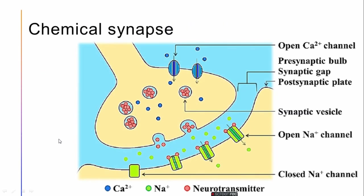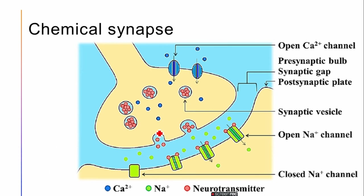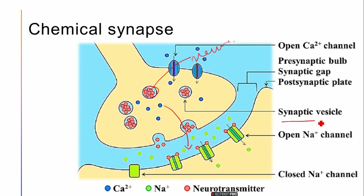Moving forward to the functional classification, we have the chemical synapse. In a chemical synapse, the axon terminals bear vesicles, inside which there are neurotransmitters. The neurotransmitters are released into the synaptic cleft. There is a space between one neuron and another, and the transmission across that space via neurotransmitters is known as the chemical synapse.